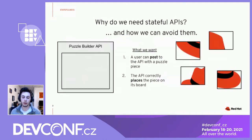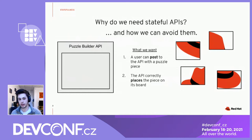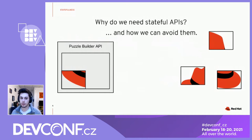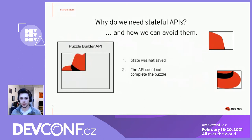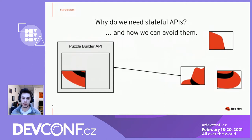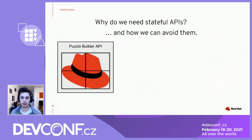To look at why we might actually need a stateful API, we can look at this example for a puzzle builder. The puzzle builder is an API — it has a board inside the API, and on the right we have puzzle pieces. We want to post these puzzle pieces over to the puzzle builder API, and then we want the API to correctly place them on its board. Without state, we can see it successfully puts a piece in and another piece in, but it doesn't save the state, so we're never going to be able to save the entire puzzle. In contrast, if we have state, we're saving the state of the board inside the API, and we're able to put all four puzzle pieces in and complete the actual set.